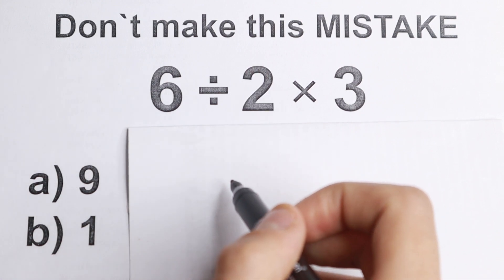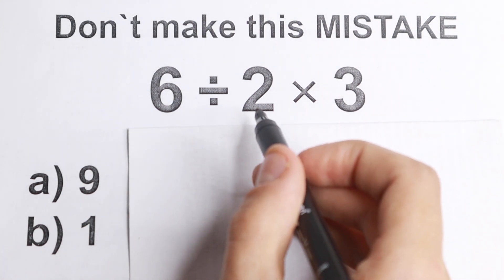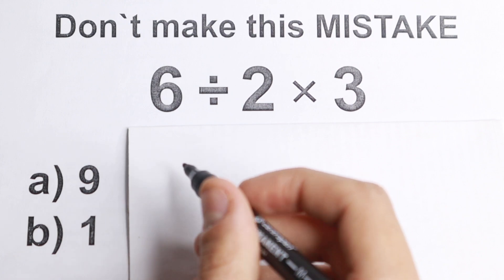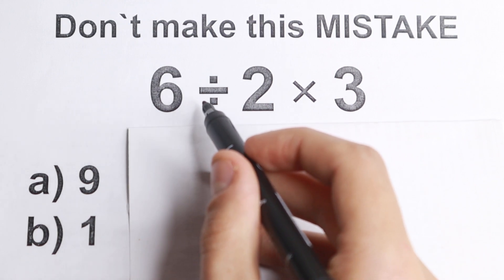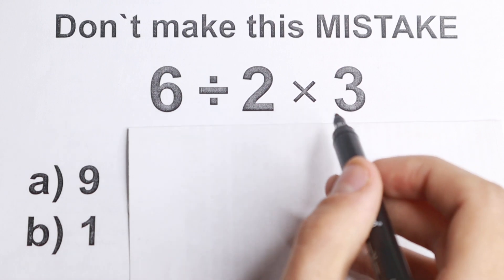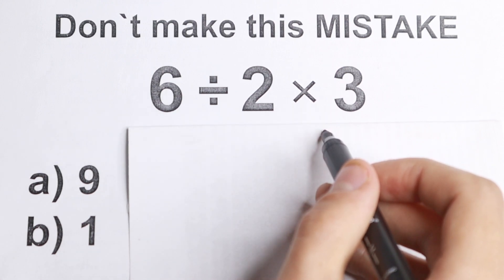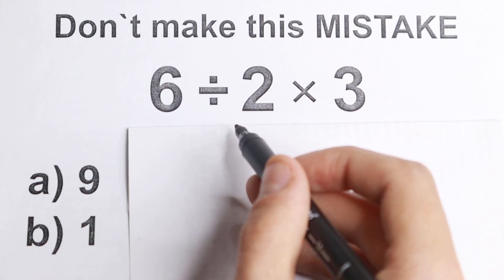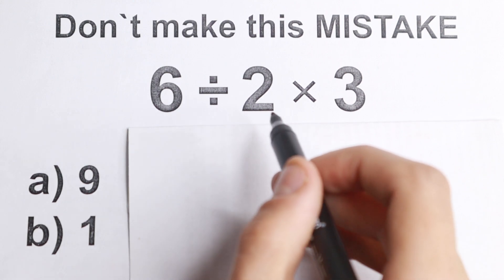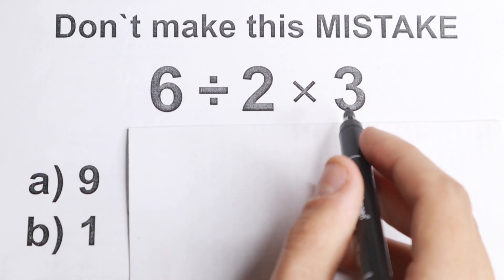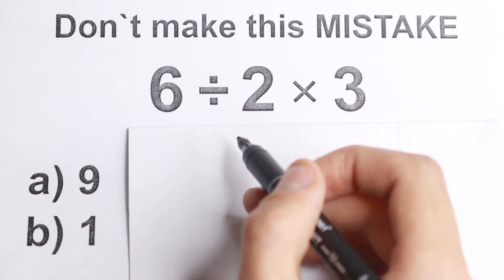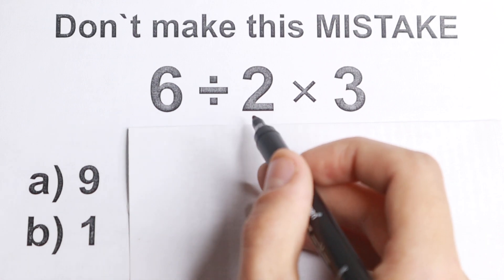Here is the problem: we have 6 divided by 2 and times 3. What makes all the difference in the world is the order we do this problem. Do we do division first and then multiplication, or another way? Obviously whatever order you select is going to create a different answer, so we need to understand the correct order. That's where this little acronym comes in — we are talking about the order of operations.